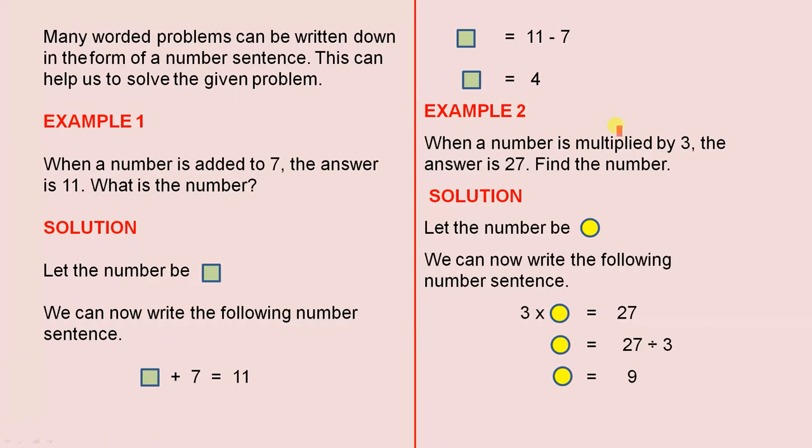Example 1. When a number is added to 7, the answer is 11. What is the number? Solution: Let the number be a square. We can now write the following number sentence: the square plus 7 equals 11. So the square equals 11 minus 7. So the square equals 4.